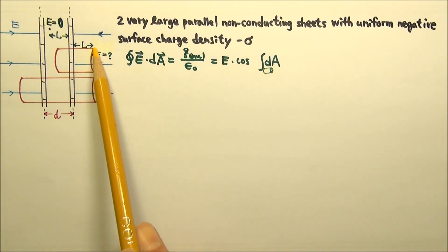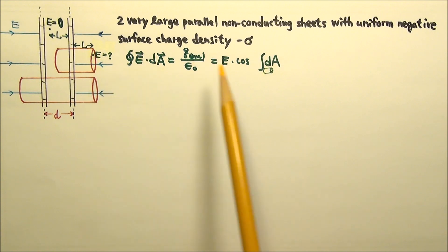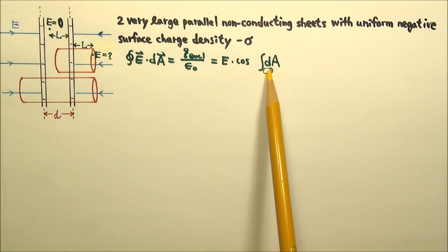By symmetry, everywhere on the right end, the electric field has the same magnitude, so we can take e out of this integral.